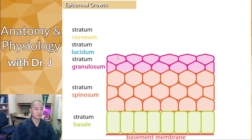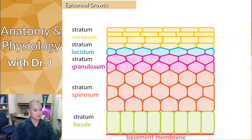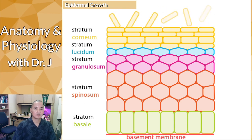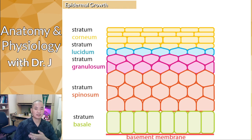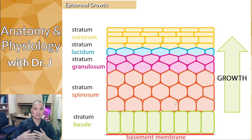As cells are pushed up from the spinosum, they become the granulosum, then the lucidum, and then the corneum — the outermost layer you can see right now. The stratum corneum is the layer that peels off. Even with regular daily activities, you're constantly shedding some skin from the stratum corneum, which is why the stratum basale must constantly divide.